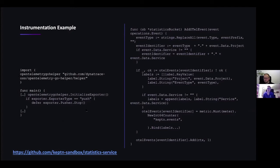On the left side is the instrumentation needed for the OpenTelemetry Go helper, which is the only thing needed to make the exporter choice work. We initialize the exporter, and if the exporter type is push, we defer a stop call. On the right side, we have the instrumentation of the metrics itself. We create a new entry in a map if a new event type is received; if it is already present, it is used; if not, it is created. The count of events only gets incremented when a new one is received.